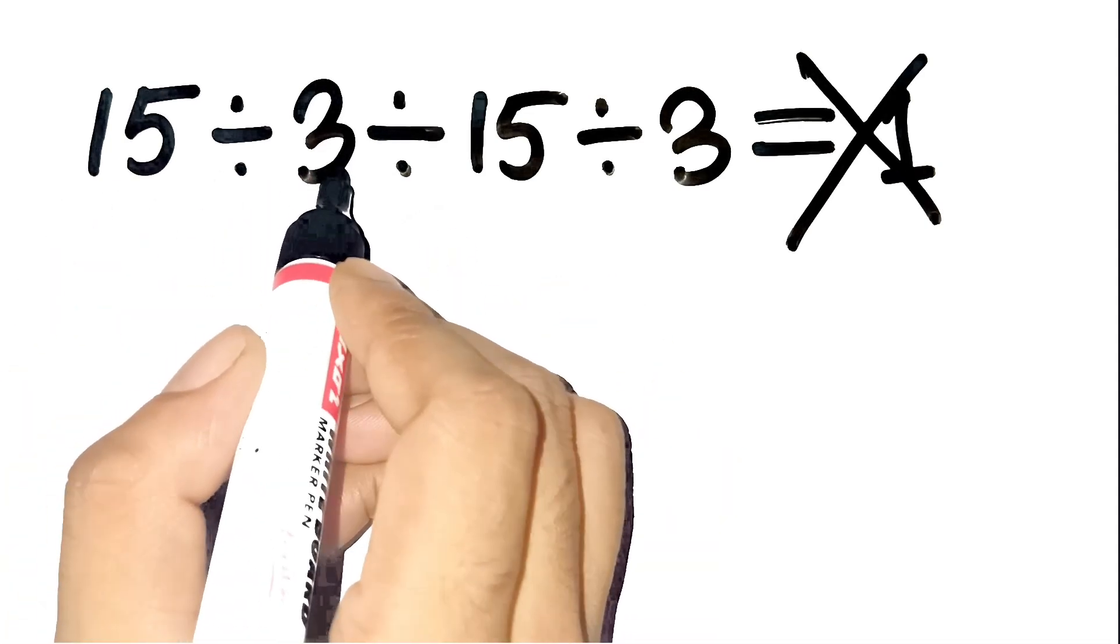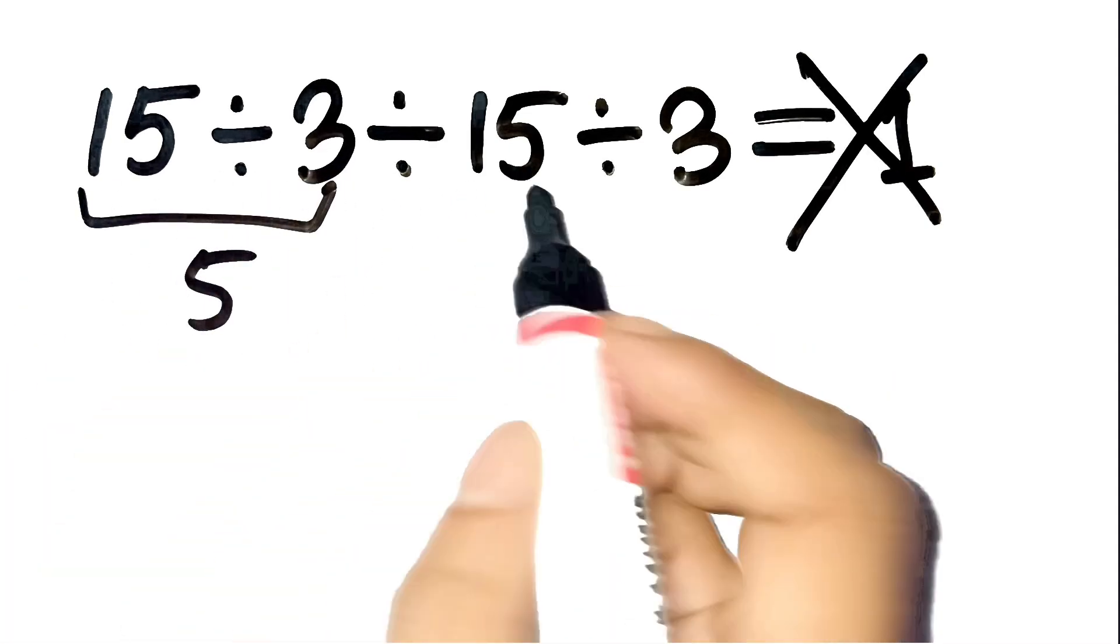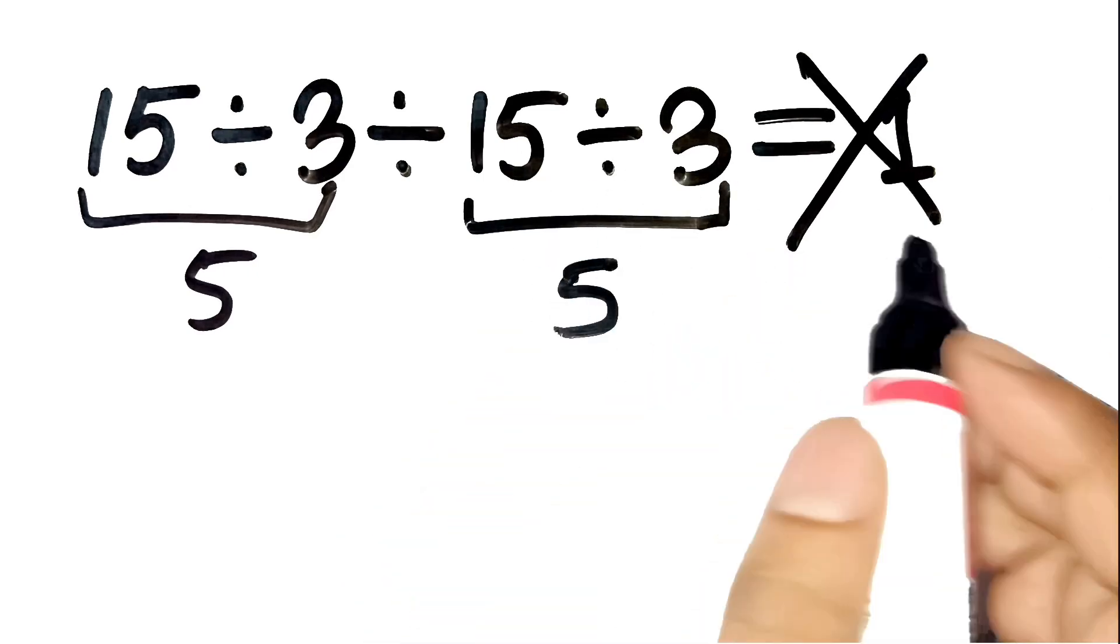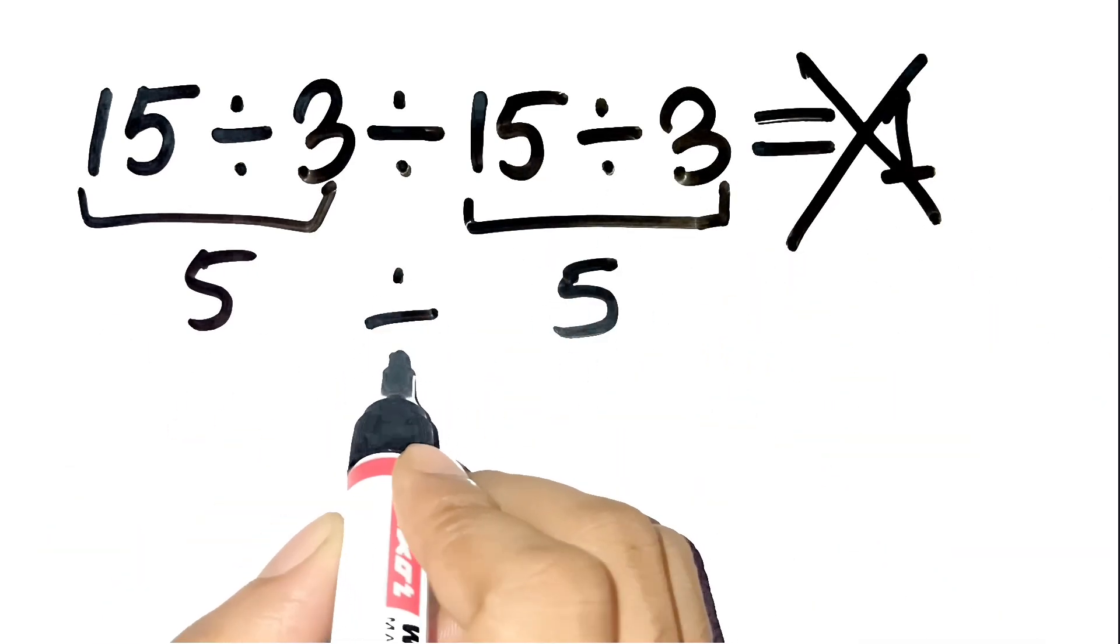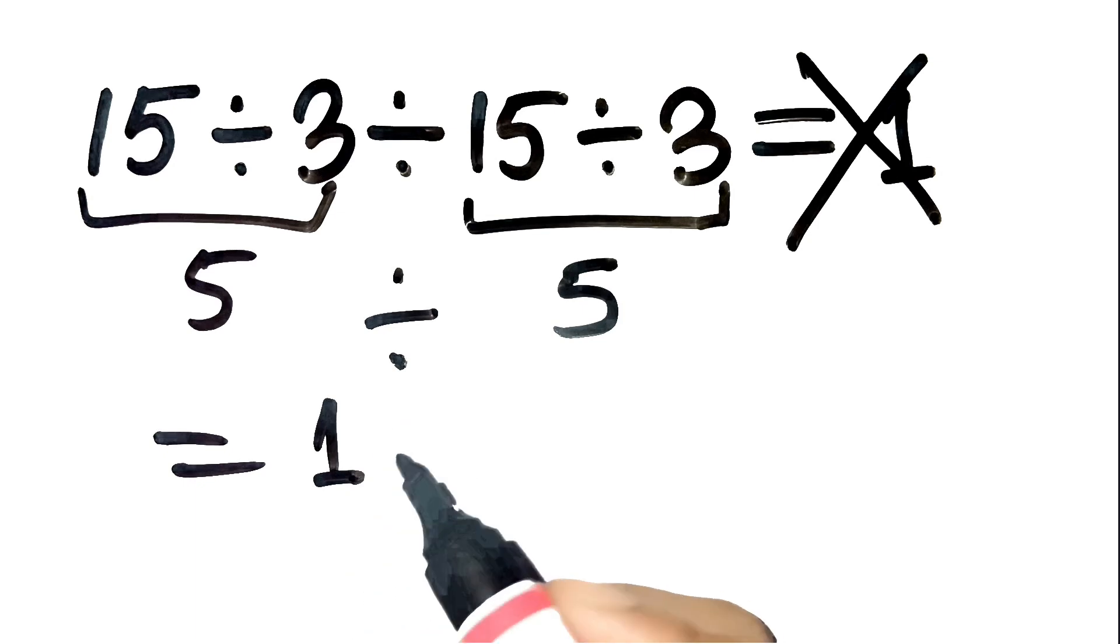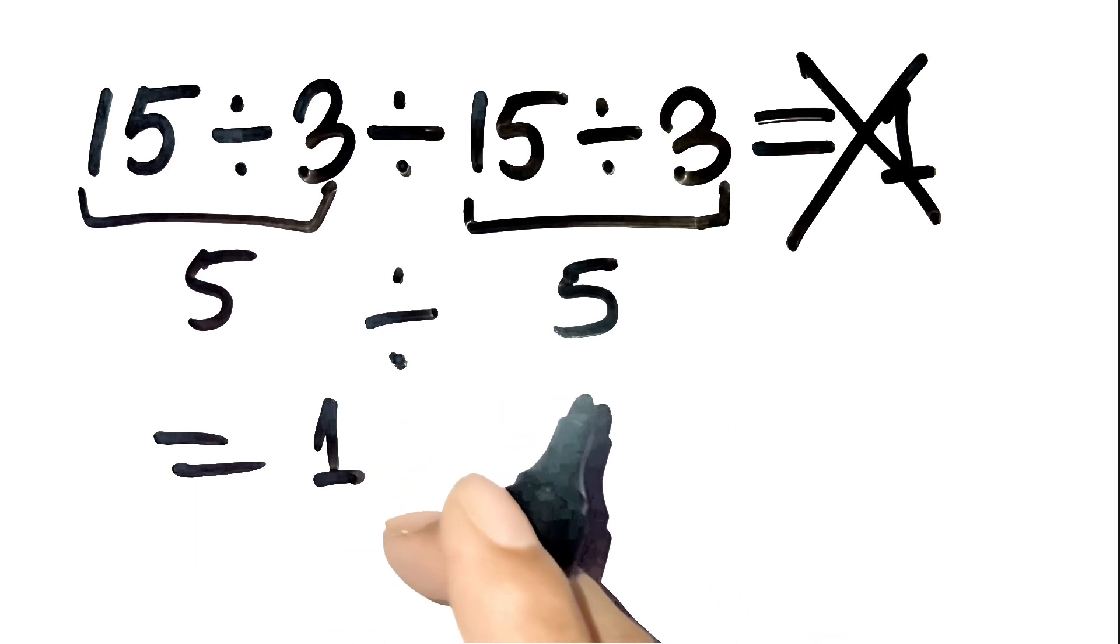15 divided by 3 is 5. Then, again, 15 divided by 3 is also 5. And finally, 5 divided by 5 gives 1, right? That seems super straightforward.